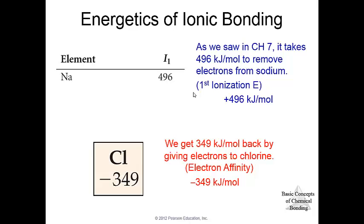When we give the electron to chlorine to form chloride, we actually get 349 kilojoules back, and that's why that energy is negative. This is electron affinity, the amount of energy released when an electron is given to an element.